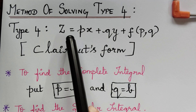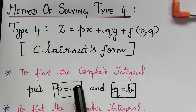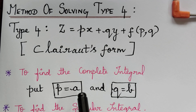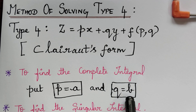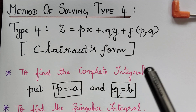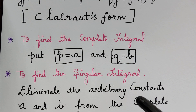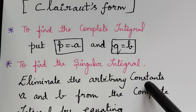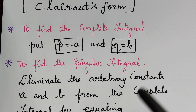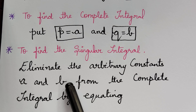Whenever you find an equation of this type, we have to find the complete integral by putting p equal to a and q equal to b in the given equation. After finding the complete integral, we have to find the singular integral by eliminating the arbitrary constants a and b from the complete integral, which we have already seen.